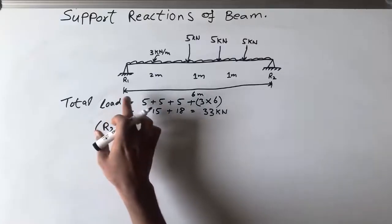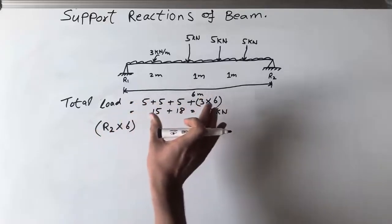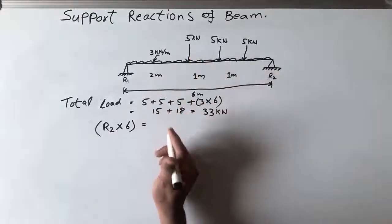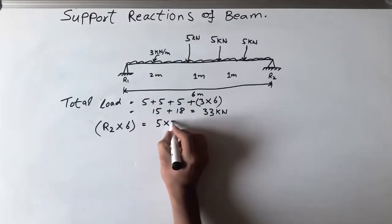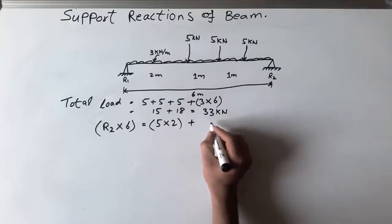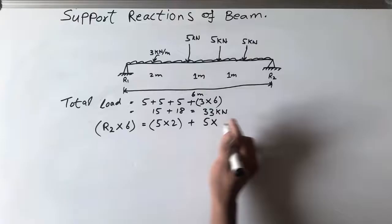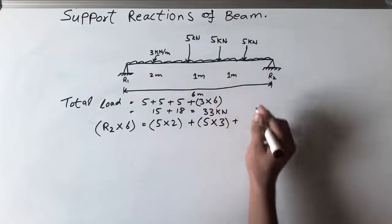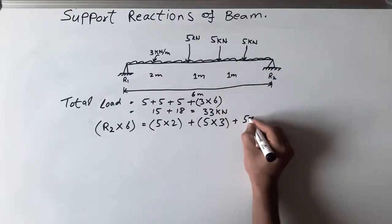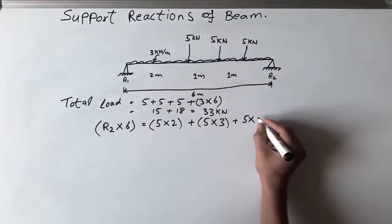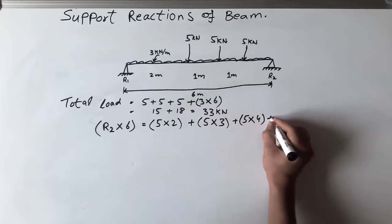This is equal to — starting with the point loads — 5 multiplied by 2 (2 meters is the arm of this load), plus the second load: 5 multiplied by 3, plus the third point load: 5 multiplied by 4 (which is 1 plus 1 plus 2, giving 4 meters from the support).